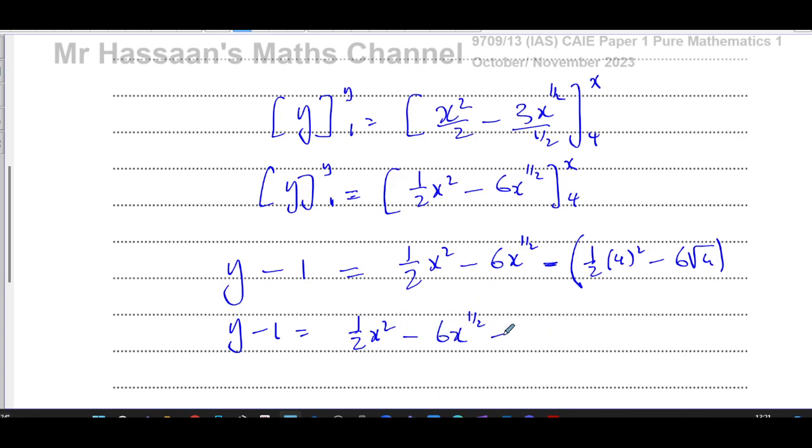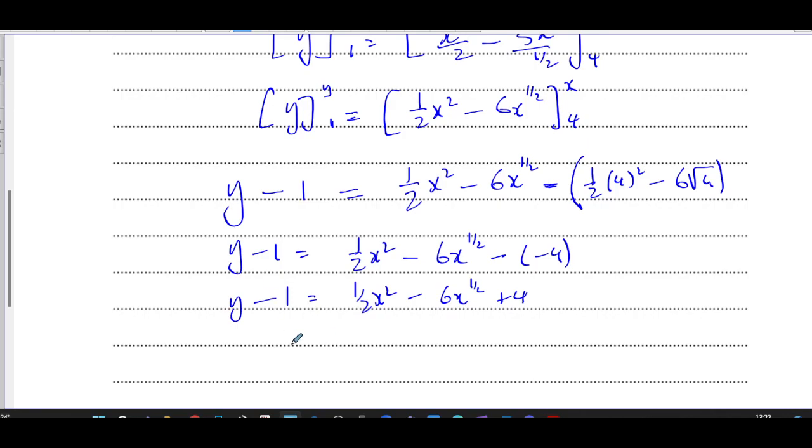You have y minus 1 equals a half x squared minus 6x to the power of a half, and that's going to give you 8 minus 12, which is minus 4. So minus minus 4. You end up with y minus 1 equals a half x squared minus 6x to the power of a half plus 4. Then add one to both sides, so y equals a half x squared minus 6x to the power of a half plus 5.